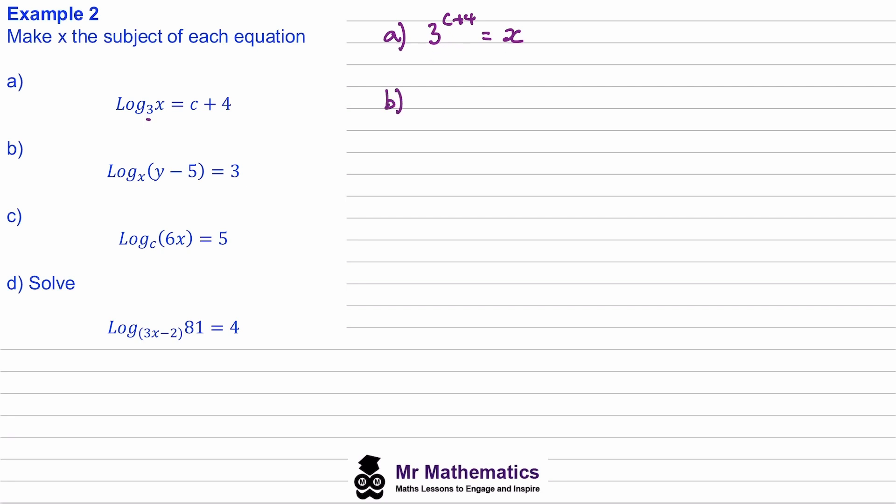For b, we've got our base x raised to the power of 3 will give us y minus 5. So to make x the subject, we need to take the cube root of both sides, so x will equal the cube root of y minus 5.